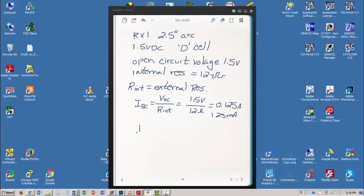We can use I is equal to 1.5 volts which we know is the voltage over the 12 ohms of internal resistance plus the R of the unknown value. And that'll give us the current for the resistor that we're measuring.